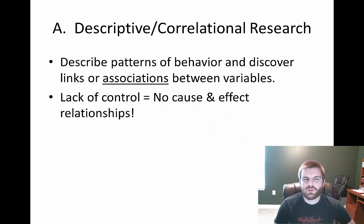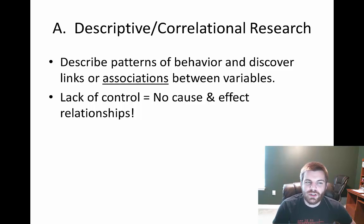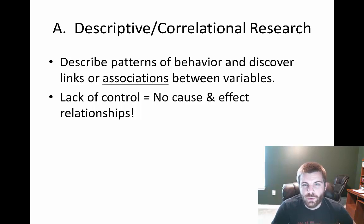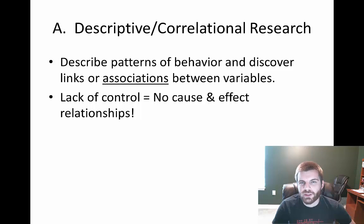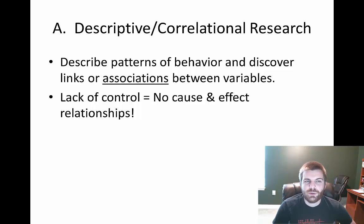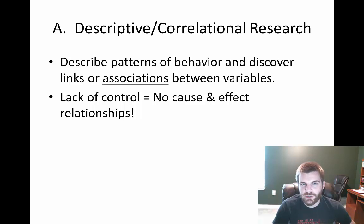So what is the descriptive correlational research style? Basically you are describing a pattern of behavior and you may have discovered a link or association between variables. Another word for correlation would just be showing an association — instead of X causing Y, it is now X may be related to Y. There is a lack of control in the descriptive correlational style because you are not talking about a cause-and-effect relationship, so you are not usually manipulating any variables.